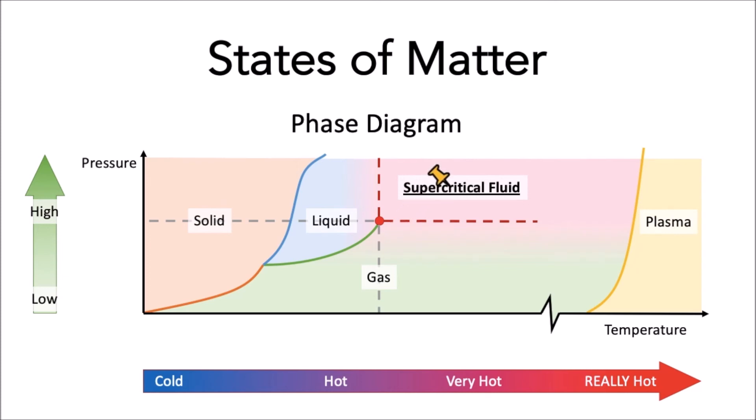When conditions reach or pass a certain temperature and pressure called the critical temperature and critical pressure, which together make the critical point, matter is in the supercritical fluid phase. And at super high temperatures are where plasmas exist.